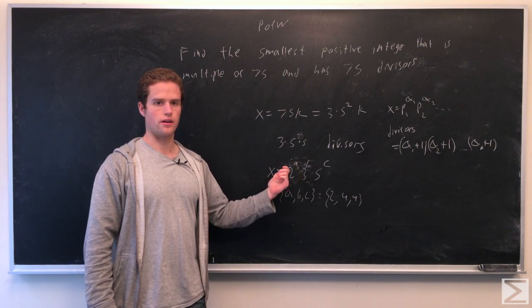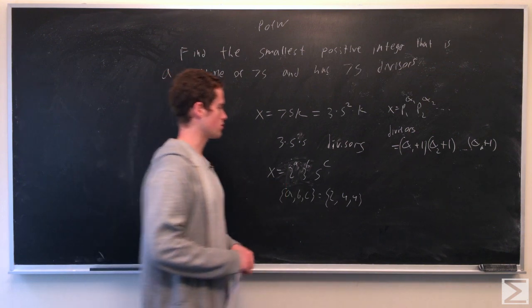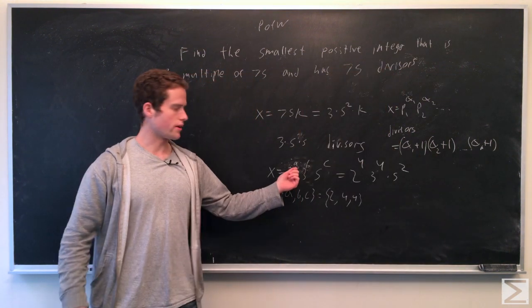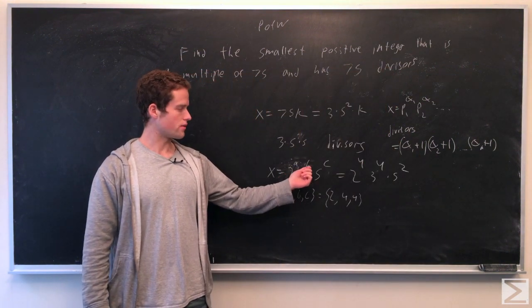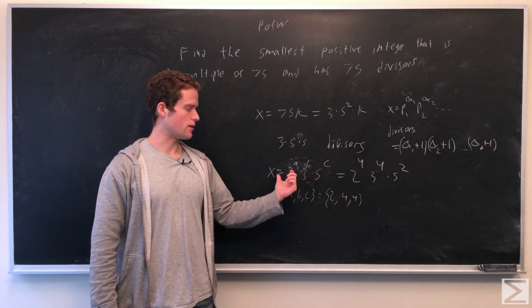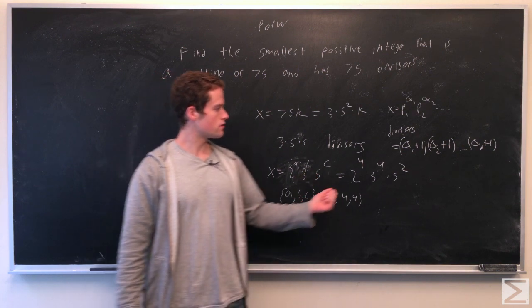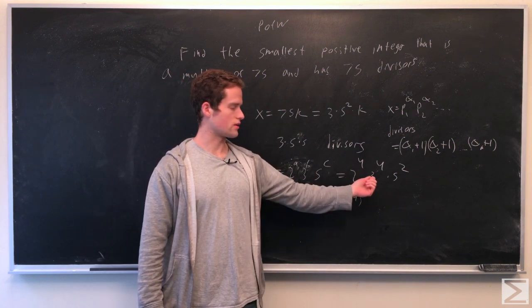Note we want the value as small as possible. So we want a to equal 4, b to equal 4, c to equal 2. The smallest power going with the biggest prime, which is 5. So this is 2^4 × 3^4 × 5². This in fact is our answer.